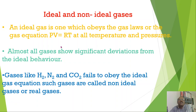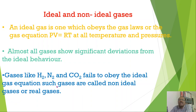In ideal gases, it is assumed that the volume of gas molecules is negligible and the force of attraction between them is also negligible. But in real gases, the volume of the molecules is considerable, and the force of attraction between them is also considerable. This is the deviation from ideality. Gases that do not obey the gas laws are called non-ideal or real gases.